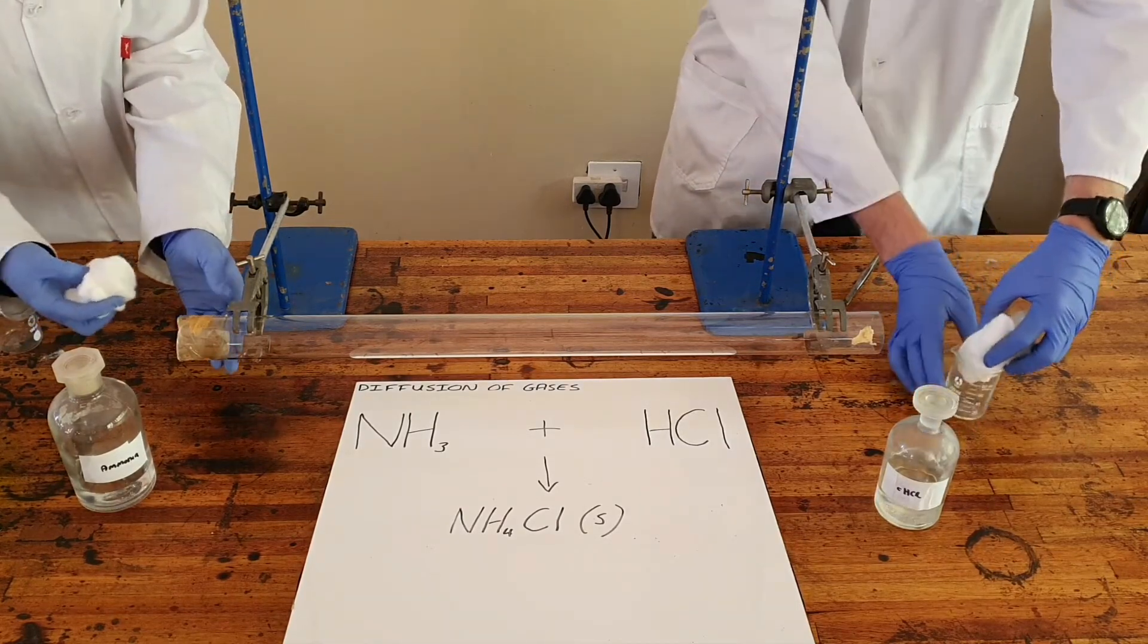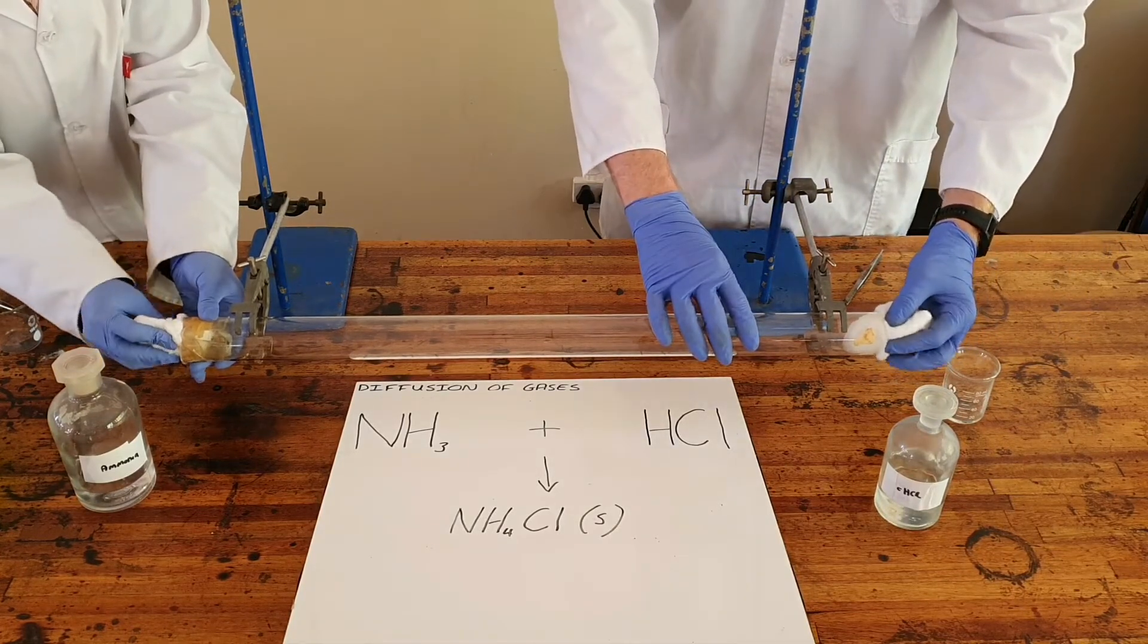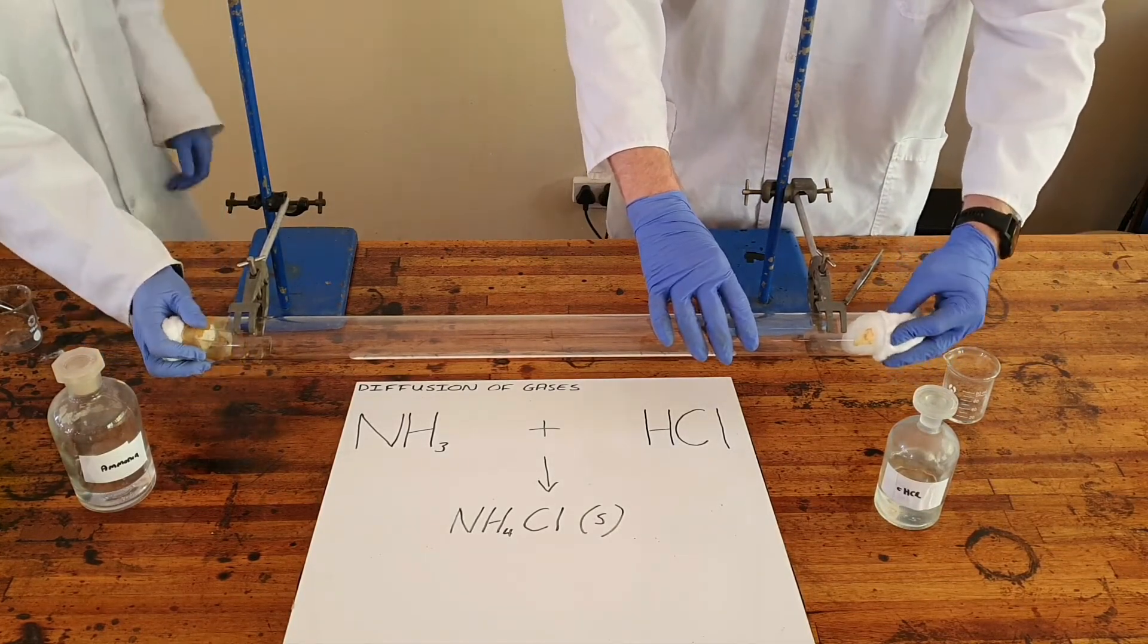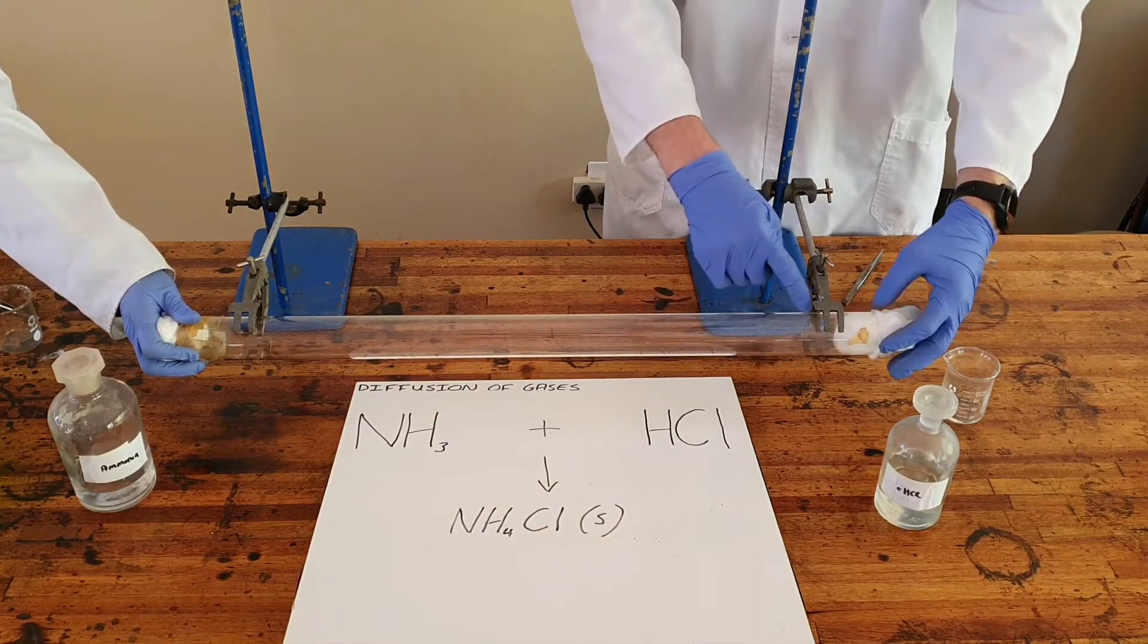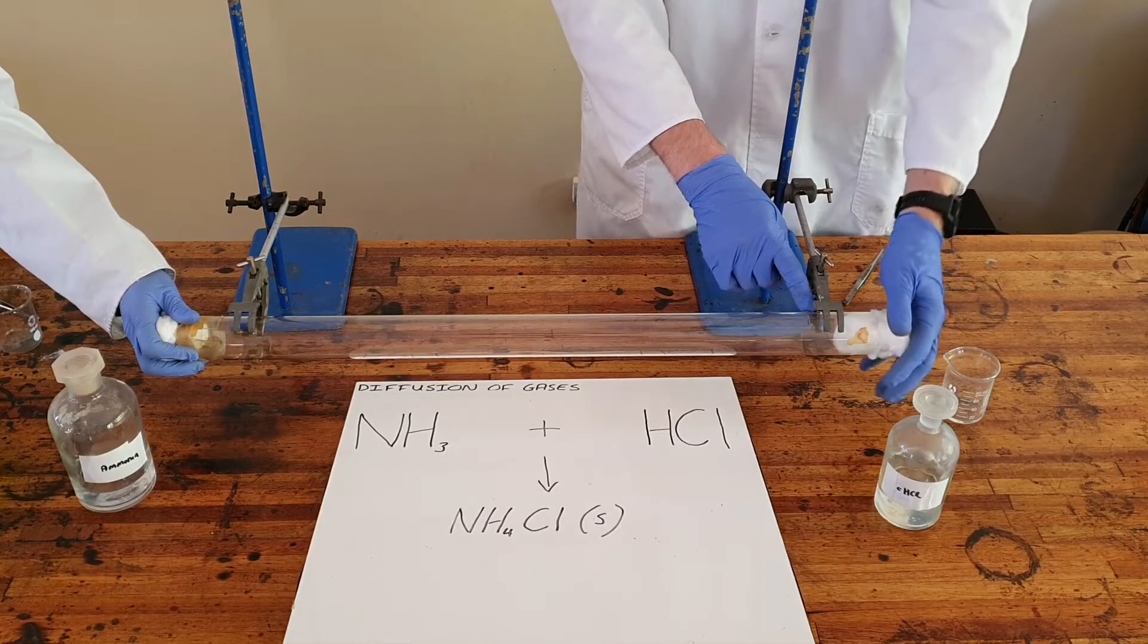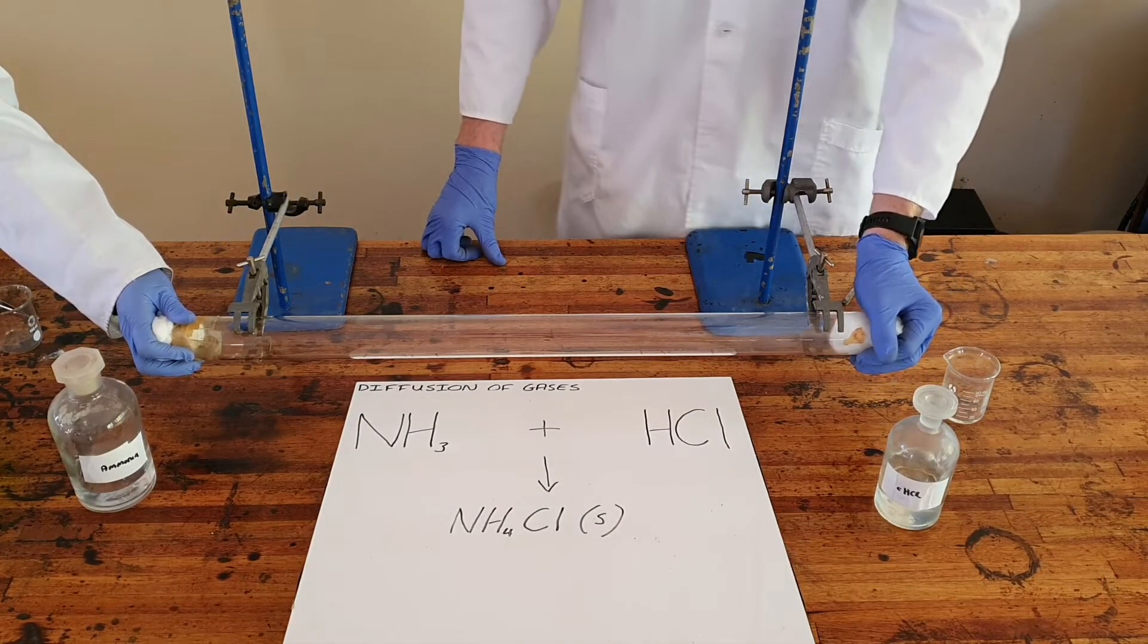We know that the substance will then evaporate inside the gas tube, and so we now have the hydrochloric acid gas present on this side of the gas tube and ammonia gas present on this side of the gas tube.